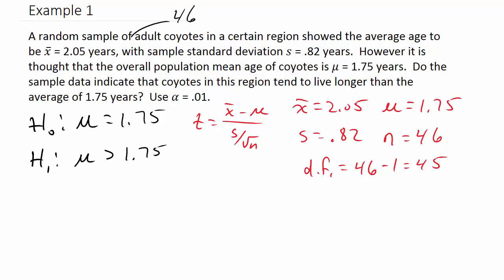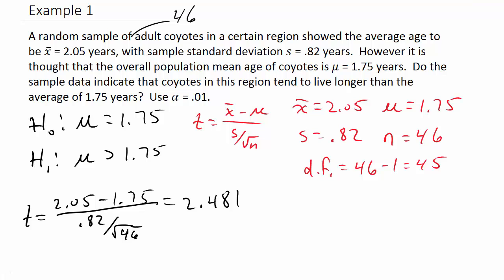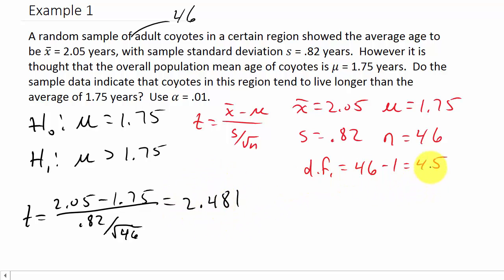Calculating the test statistic: t equals 2.05 minus 1.75, over 0.82 divided by the square root of 46. We get t equals 2.481, and our degrees of freedom is 45. Now let's go to our table and look up 2.481 with degrees of freedom 45.